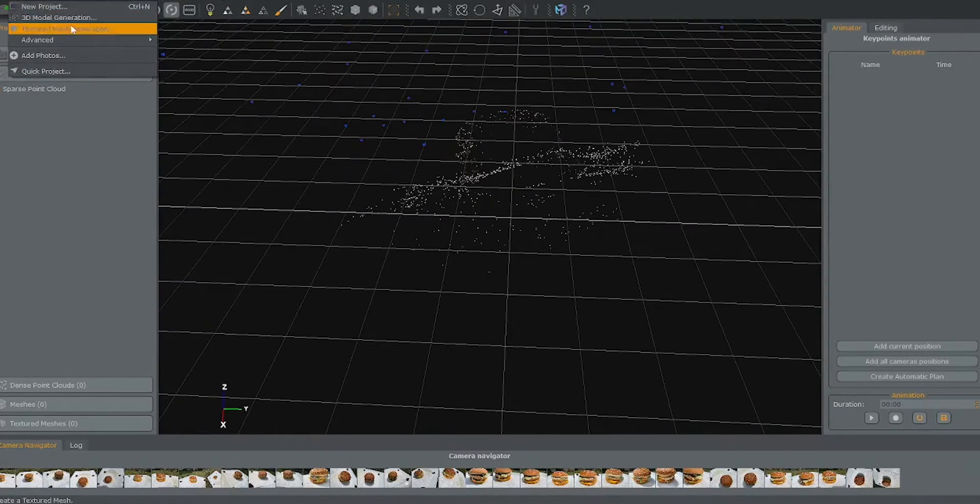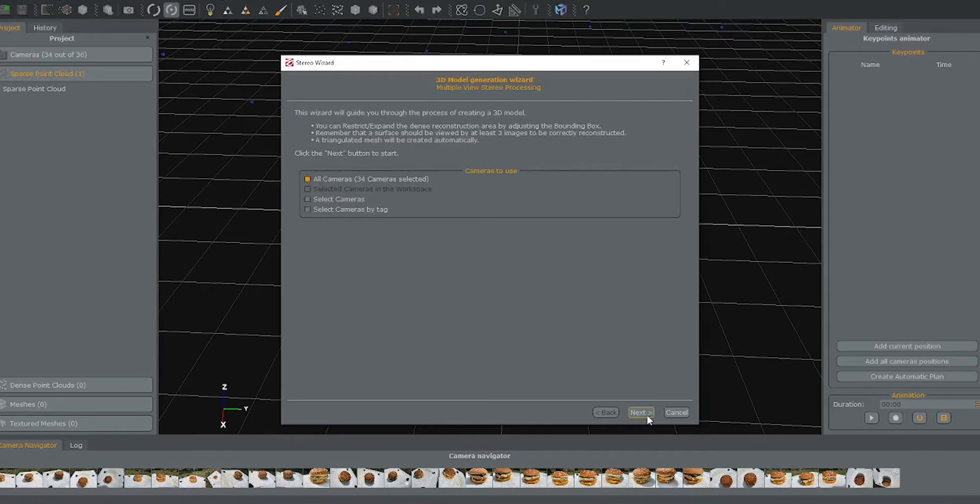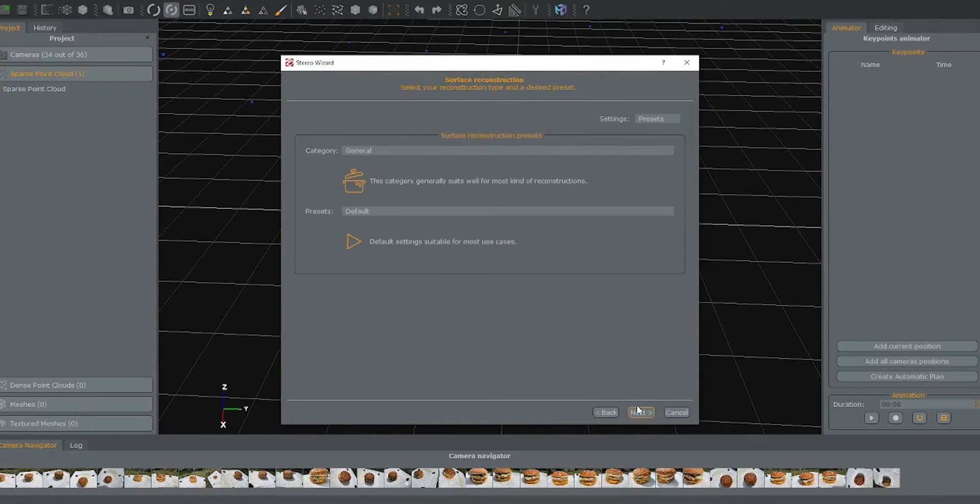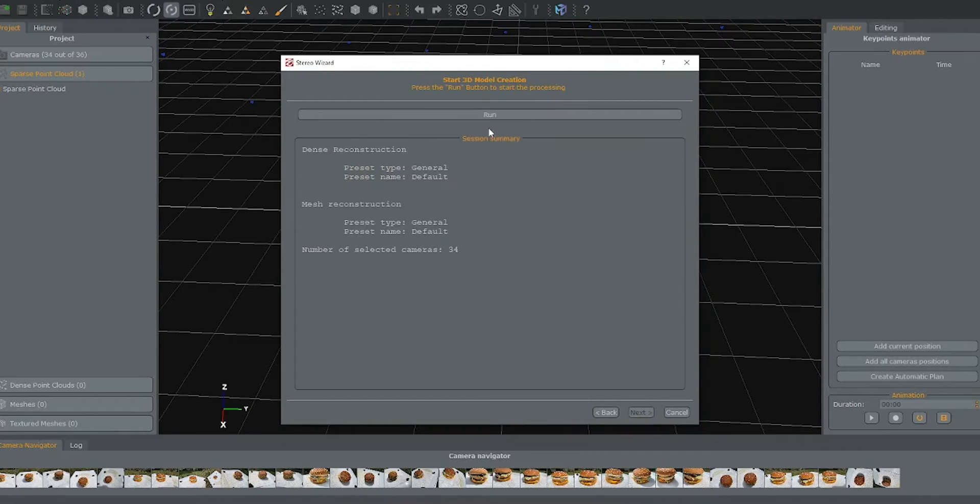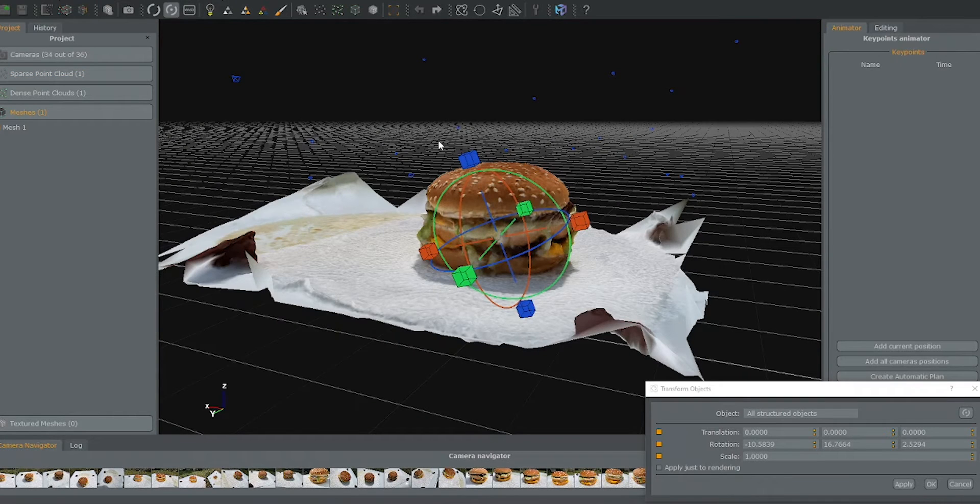So now I'm going to generate it into a 3D model by using the 3D model generation button. Just click next through some of these settings and I'm going to go ahead and let this run. Here we've got our final 3D model. As you can see it picked up some of the paper towel and some of the rocks, but we'll go ahead and cut that out.